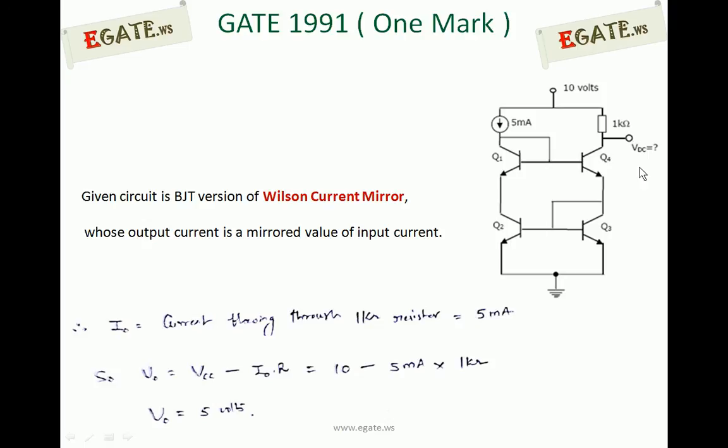Now you can write the equation for VDC. VDC, which we call V0, equals VCC minus I0 into R. I0 is the output current, same as 5 mA. So 10 minus 5 mA into 1 kOhm equals 5 volts. 10 minus 5 is 5 volts.